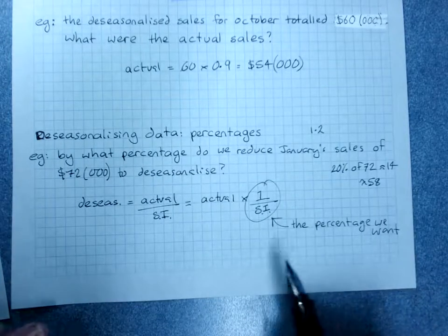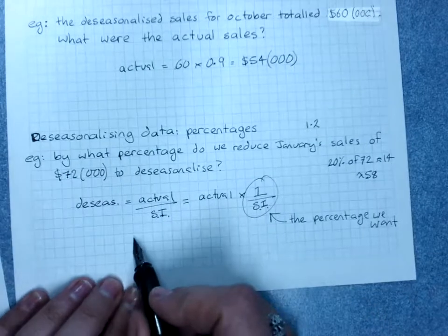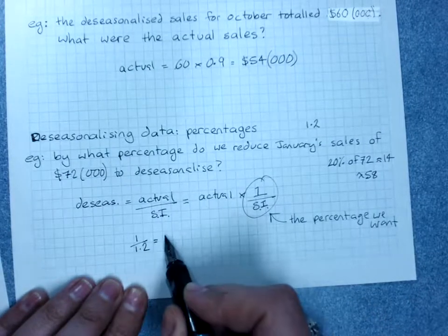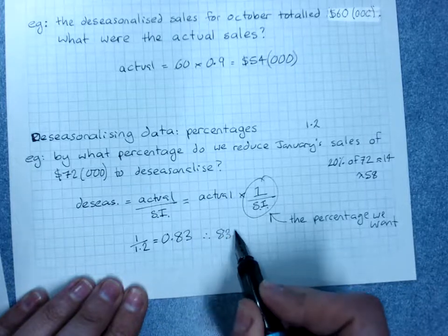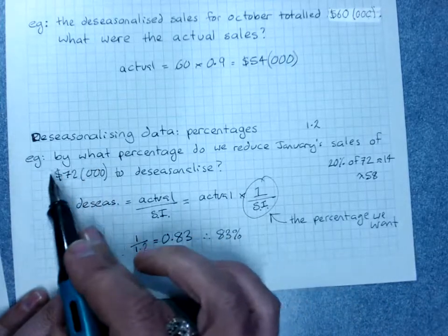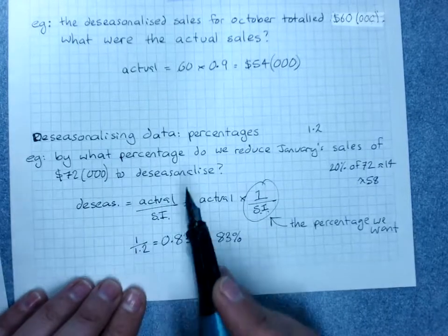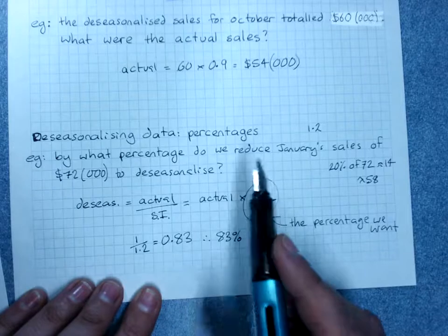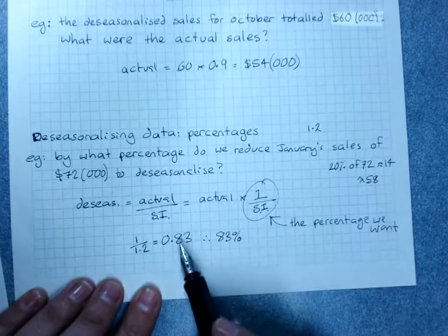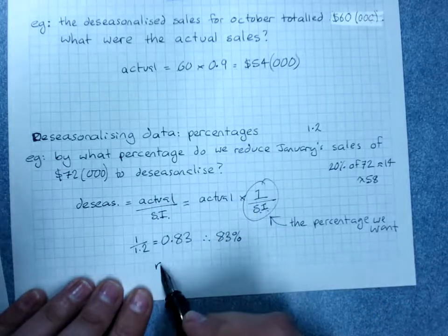Because a fraction times an amount, that's a percentage as a decimal. So 1 over 1.2 is about 0.83. So we want 83% of this as our de-seasonalized data. The difference there, of course - we want to reduce it by how much? Well, 83% means we've reduced...